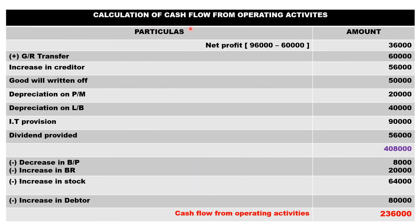Cash flow from operating activity: net profit thirty-six thousand; add GR transfer, add increase in creditors, add goodwill written off, add depreciation on plant and machinery and land and building, add new provision for tax ninety thousand, add new provision for dividend fifty-six thousand — total four lakh eight thousand. Less decrease in bills payable, less increase in stock sixty-four thousand, less increase in debtors eighty thousand, less increase in BR twenty thousand — giving cash flow from operating activity of one lakh sixty-six thousand.